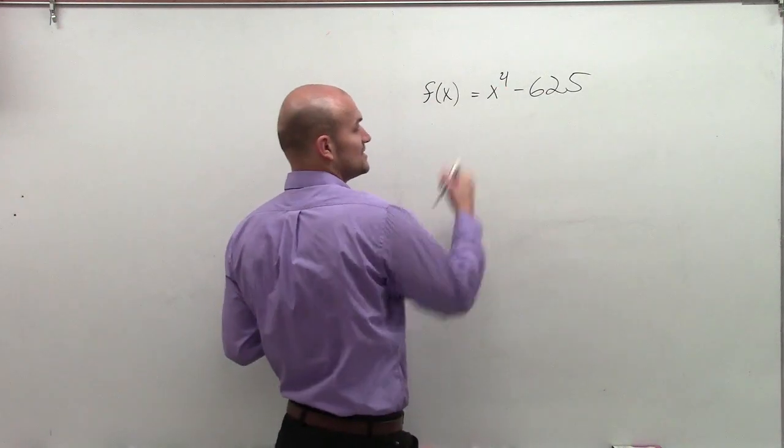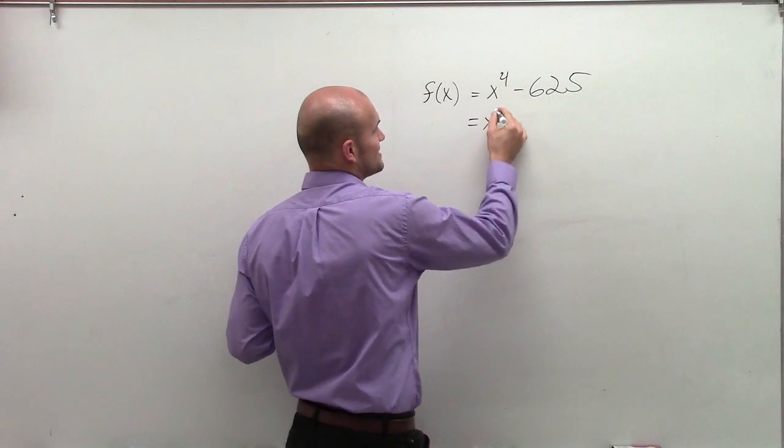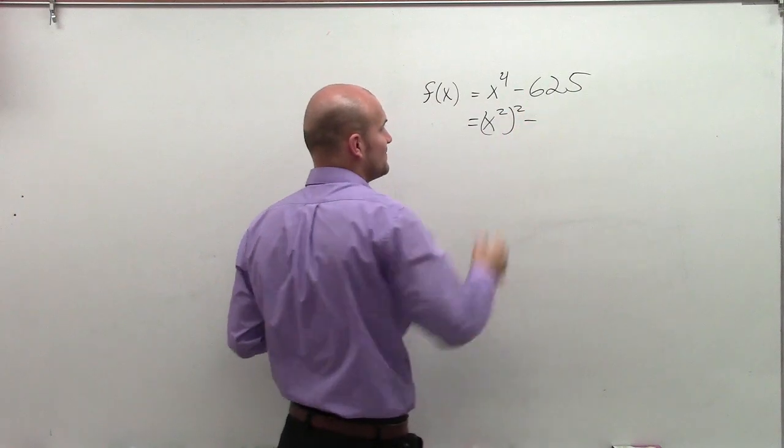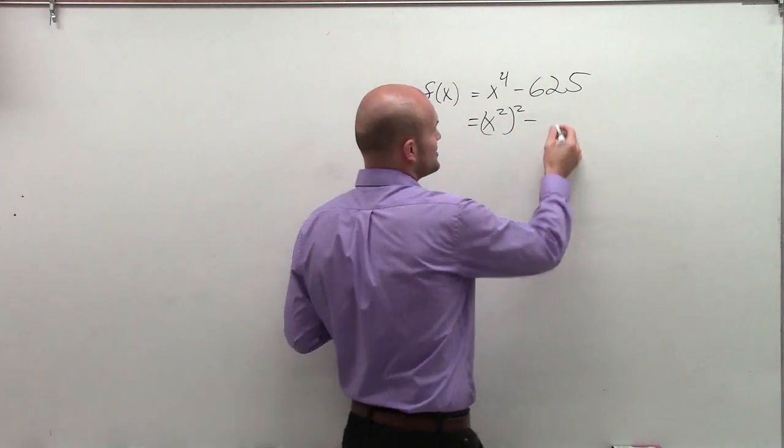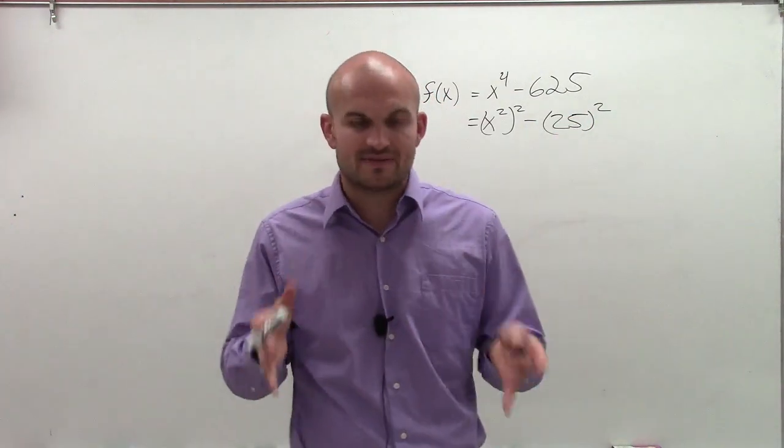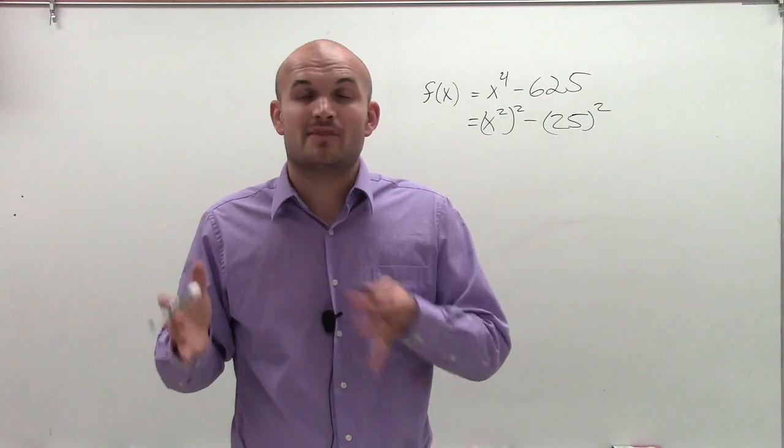So here, can I rewrite this as a difference of two squares? Yes. Is x to the fourth a square number? You bet it is. It can be rewritten as x squared squared. And can 625 be rewritten as a square number? You bet. That can be rewritten as 25 squared.